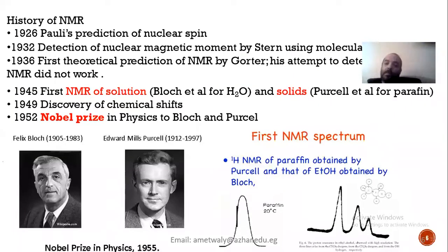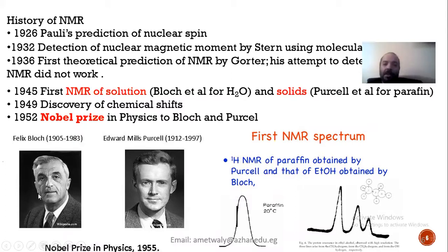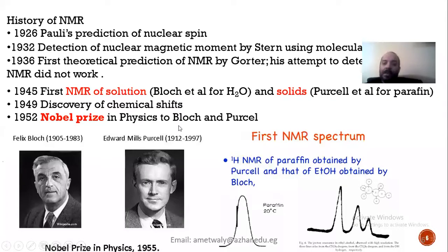First, NMR is important. In the year 1945, the first NMR for a solution was made by Bloch, and the first NMR for a solid was made by Purcell — for paraffin. Just seven years later, at 1952, they received a Nobel Prize for this discovery.